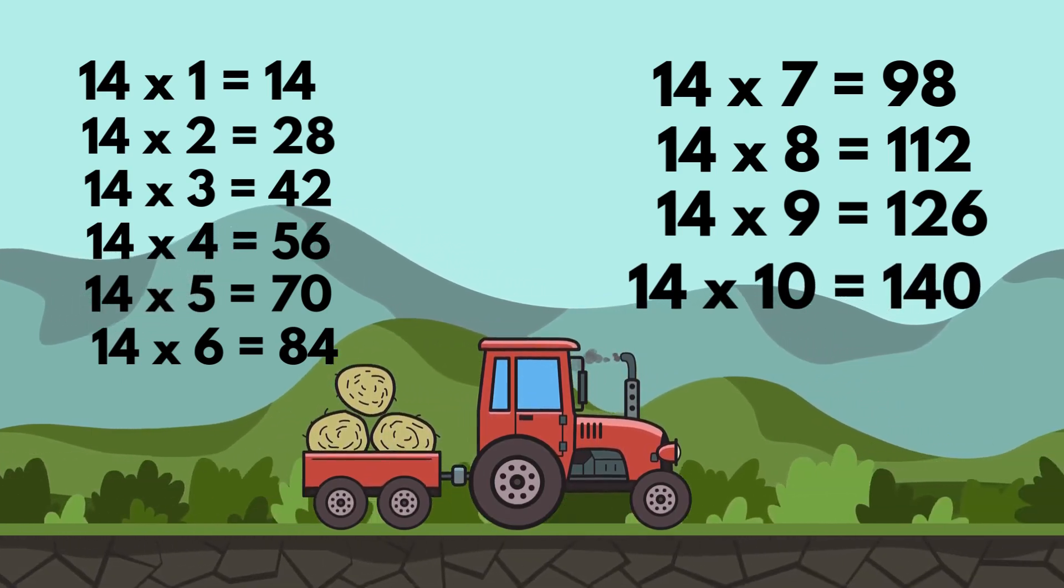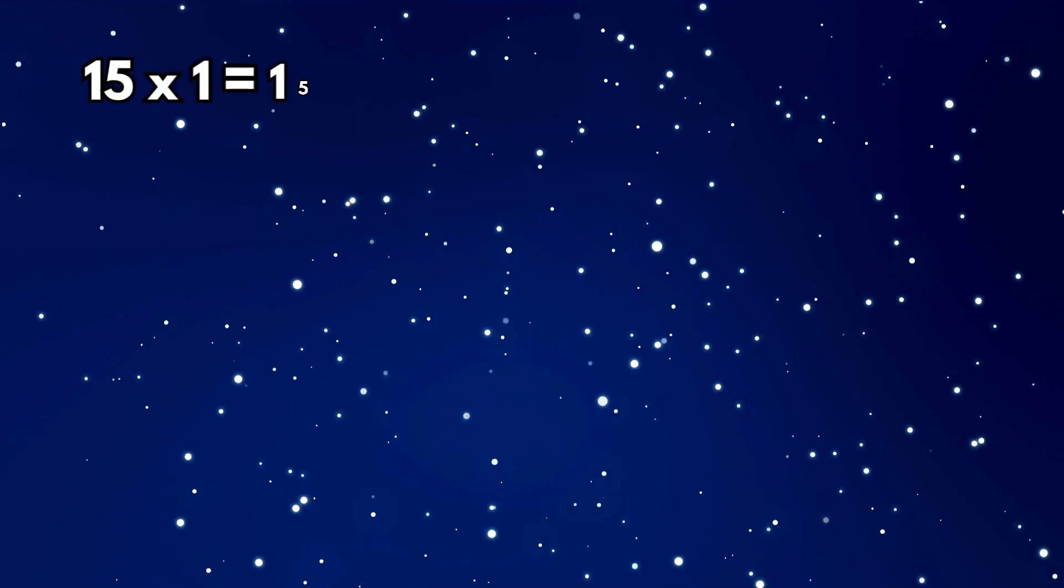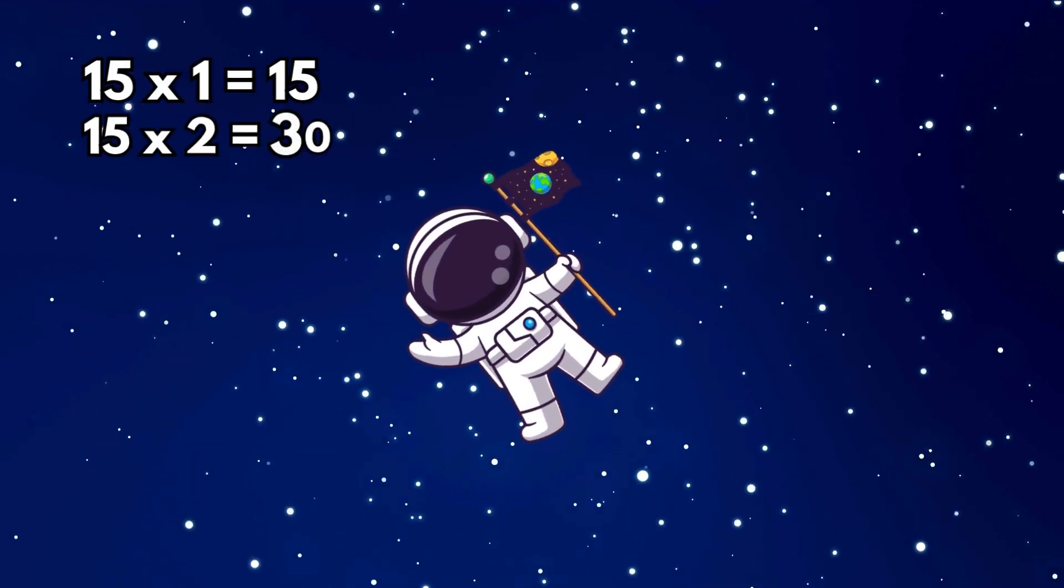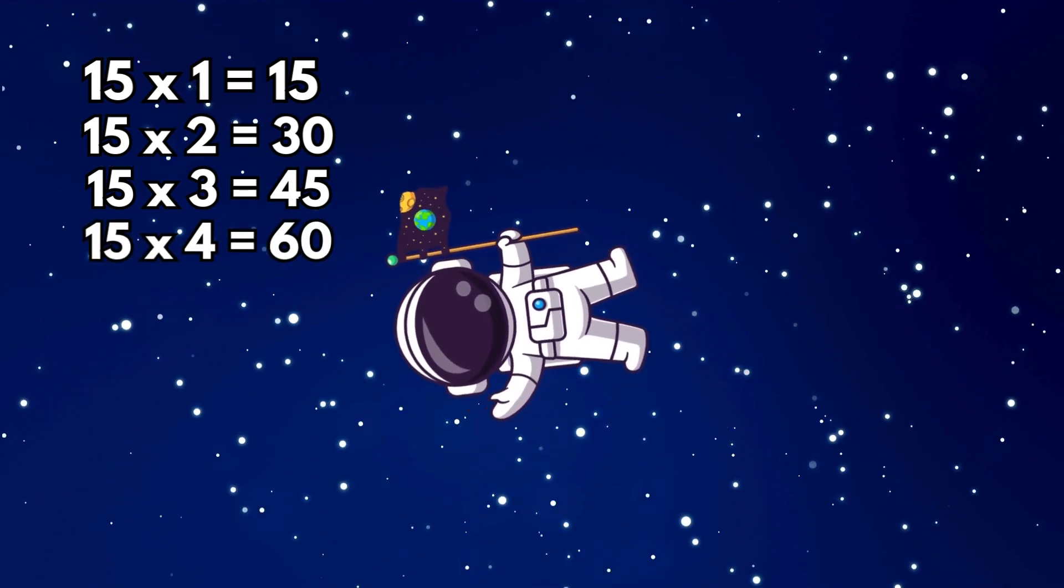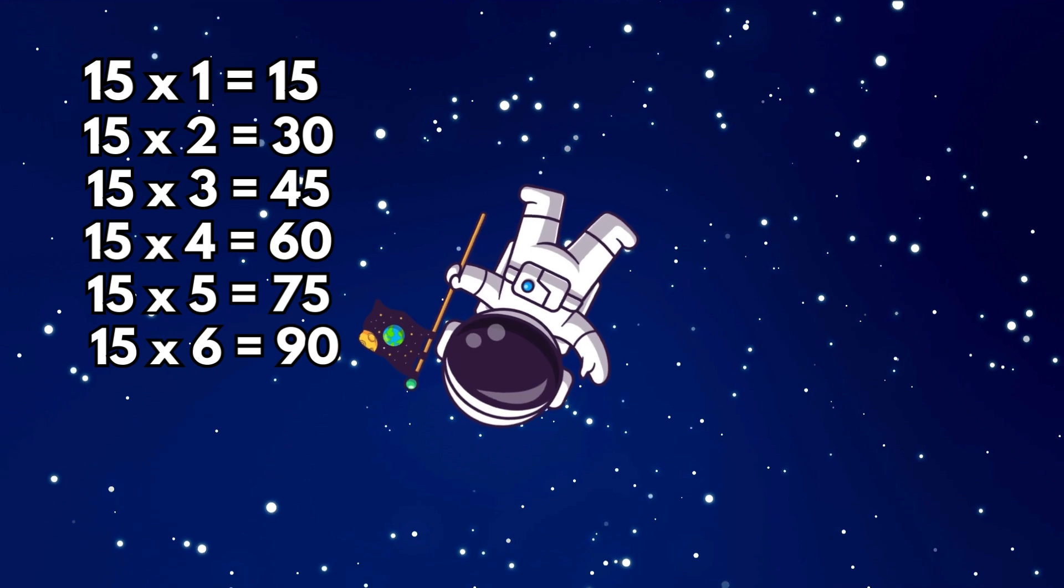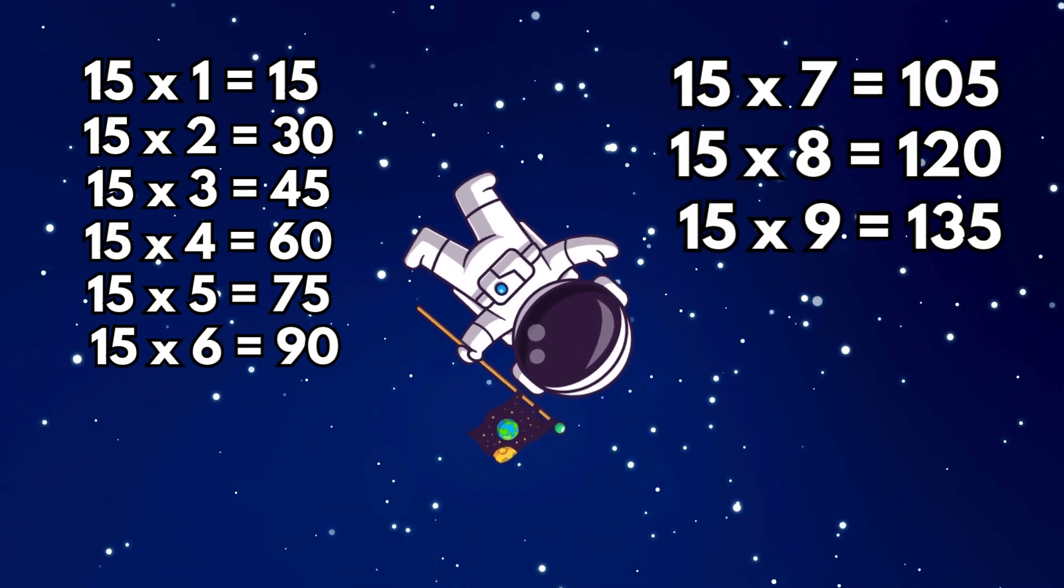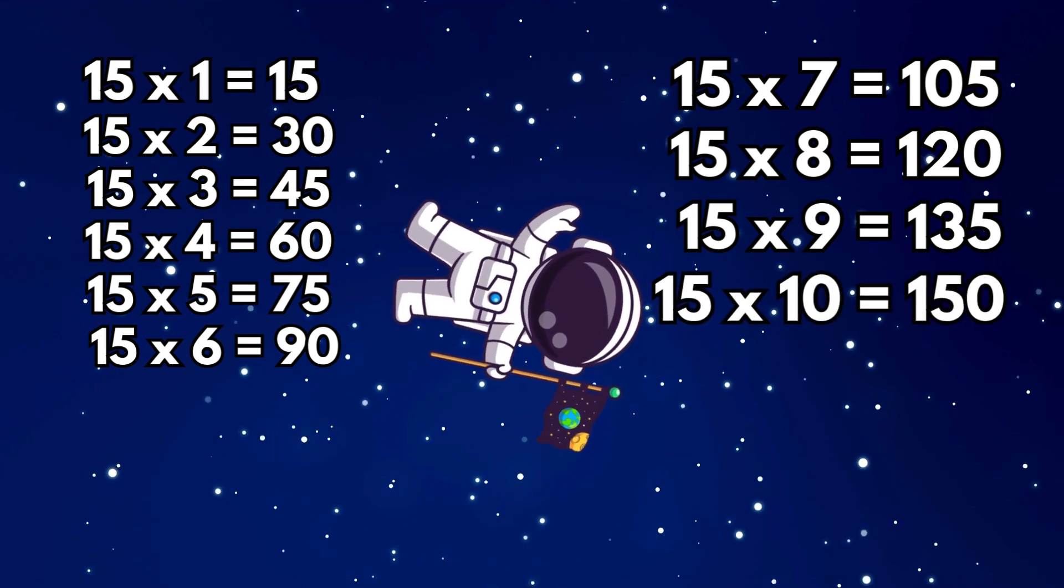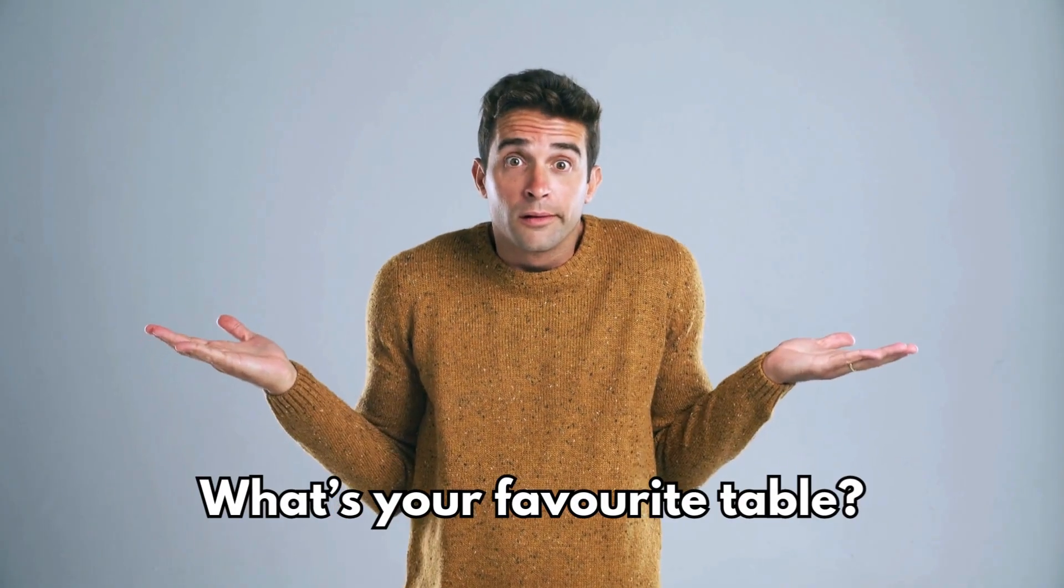Table of 15. My favorite! 15 1's are 15, 15 2's are 30, 15 3's are 45, 15 4's are 60, 15 5's are 75, 15 6's are 90, 15 7's are 105, 15 8's are 120, 15 9's are 135, 15 10's are 150. What's your favorite table?